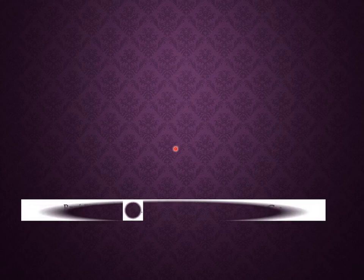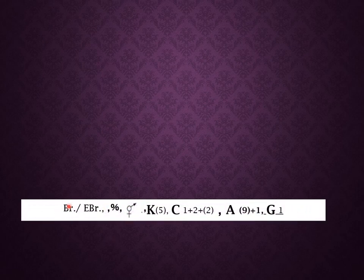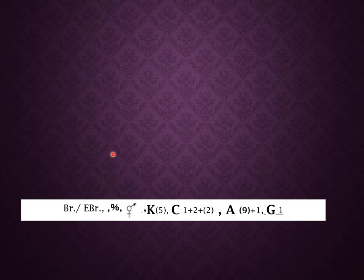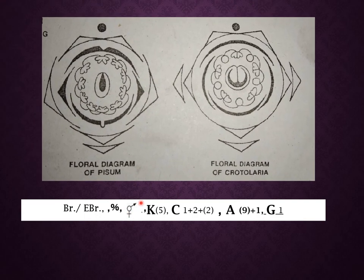Now we come to discuss the floral diagram of the family Papilionaceae. The family Papilionaceae flower is represented as bracteate or ebracteate. They are zygomorphic and bisexual. Zygomorphic means the flowers are irregular — when dissected from more than one plane, the flowers are unequal.